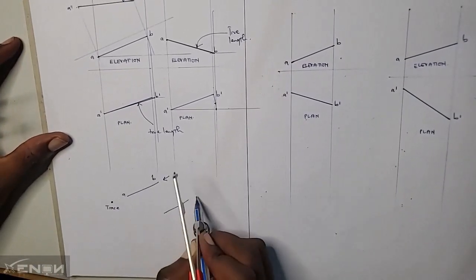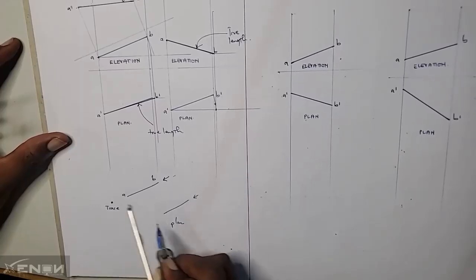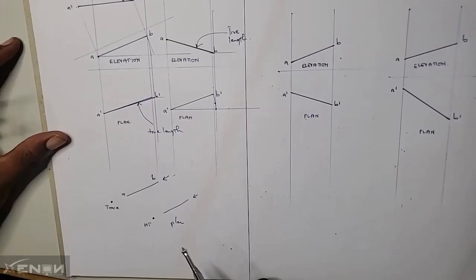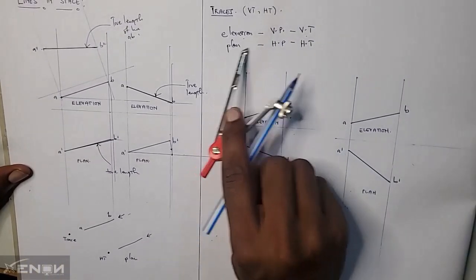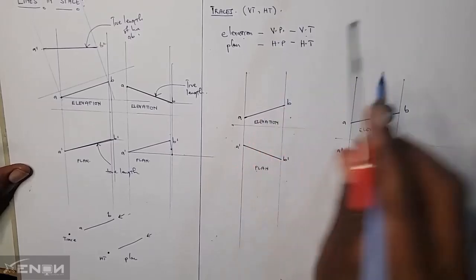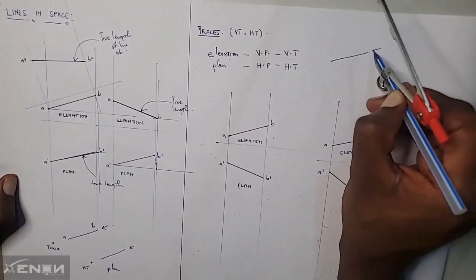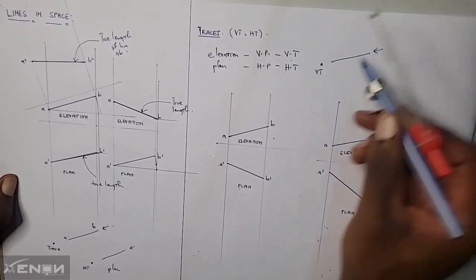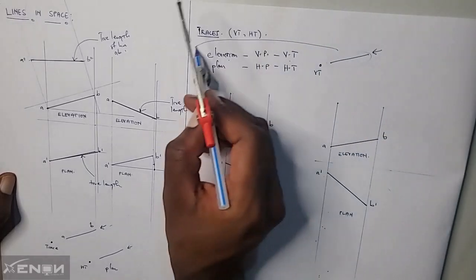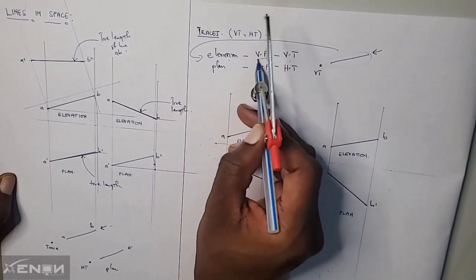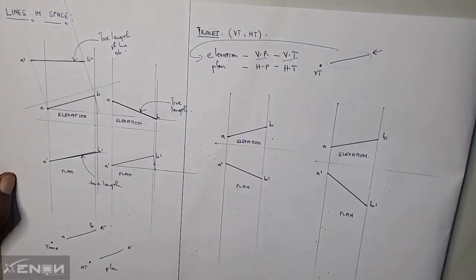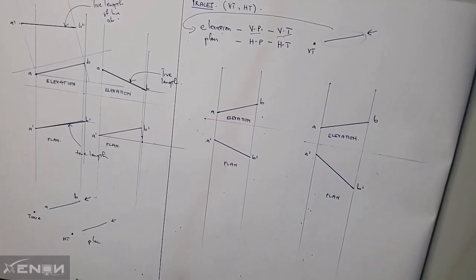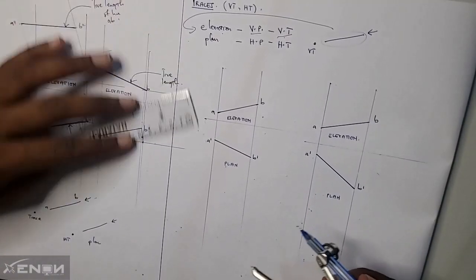So if I see through a plan, whatever trace I get is going to be a horizontal trace, because we've said the plan corresponds with the horizontal trace. If I see through an elevation, the trace I get is going to be a vertical trace, because elevations correspond to vertical planes and vertical traces.